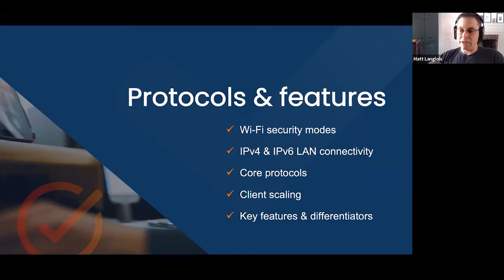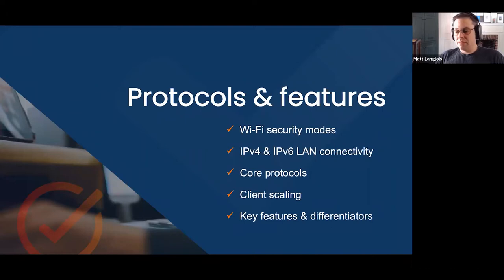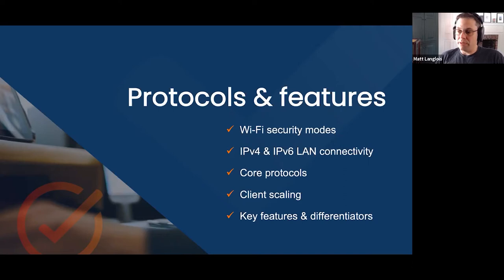Next on the priority list is IPv4 and IPv6 LAN connectivity — that is super important and has to be rock solid. That includes things like DHCP, DHCPv6, SLAAC, ICMP, ICMPv6, multicast, and all of that on the IPv4 and IPv6 connectivity side. That falls into core protocols as well: DNS, HTTP, all the application-level protocols that a consumer would potentially use on their home network over Wi-Fi.